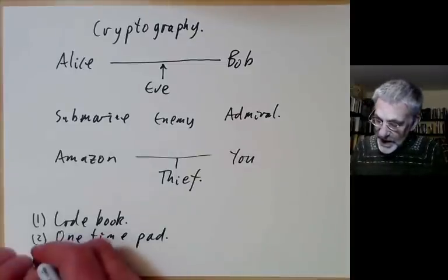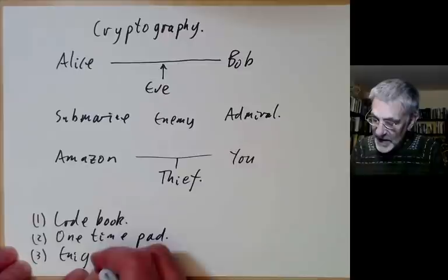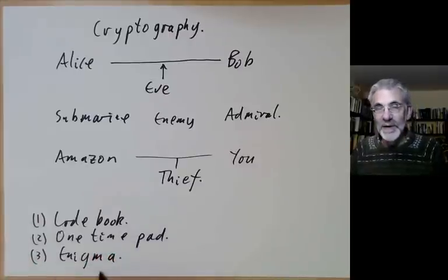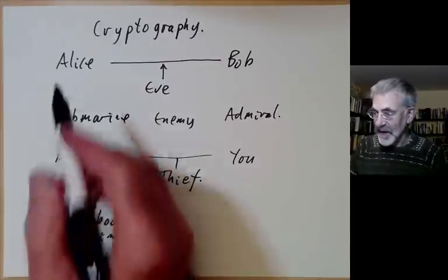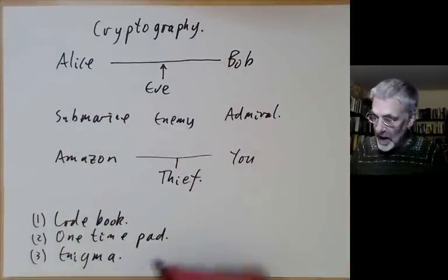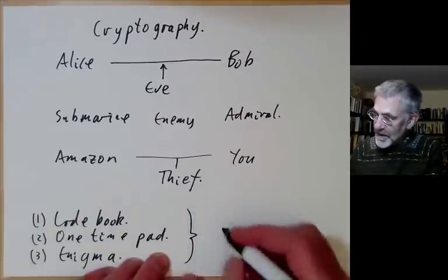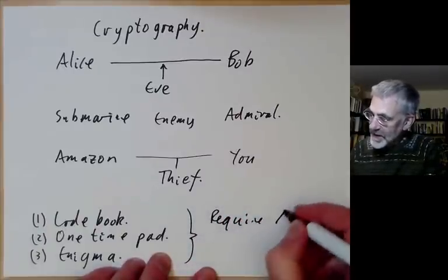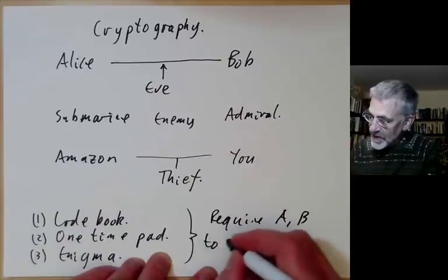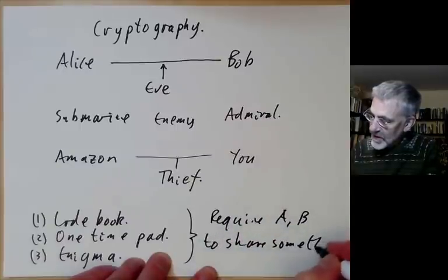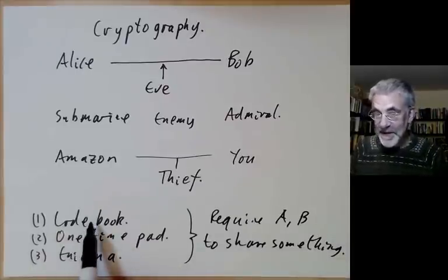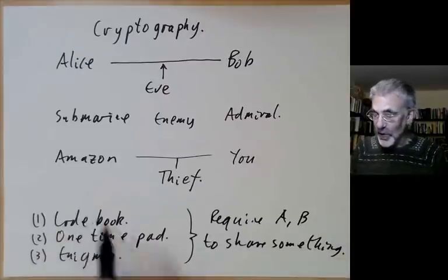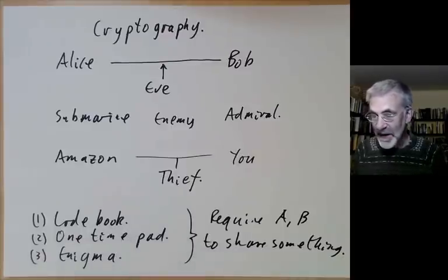A third method is something like the German Enigma machine in the Second World War — a very ingenious machine that turned messages into seemingly random garbage and decoded them at the other end. Alice and Bob would both have this Enigma machine. But there's a big problem with all of these: they require Alice and Bob to share something — the same code book, one-time pad, or Enigma machine.